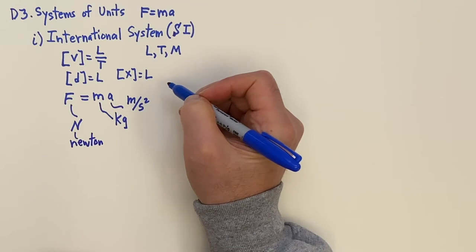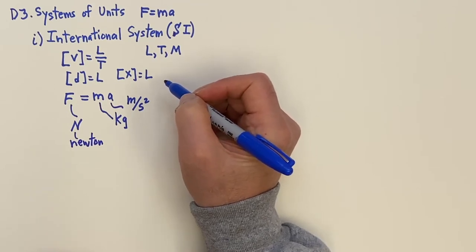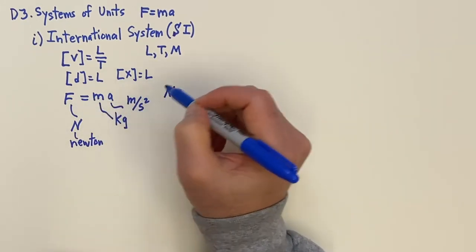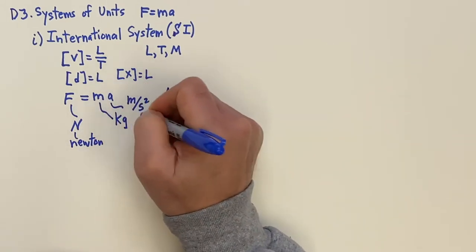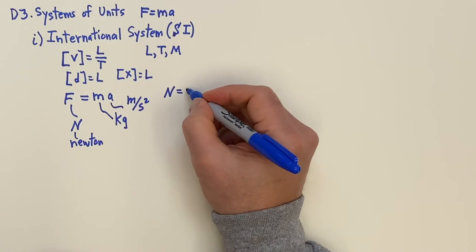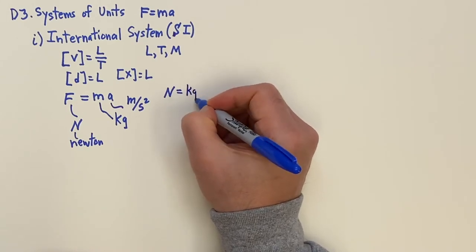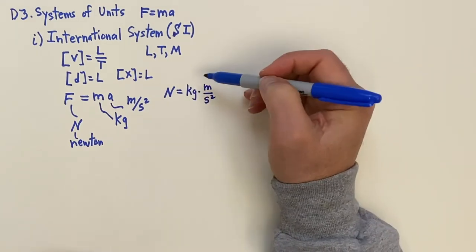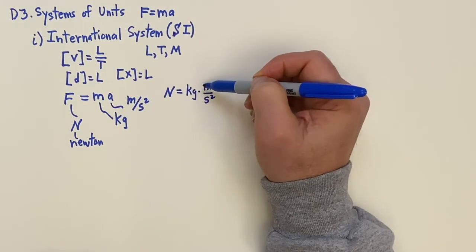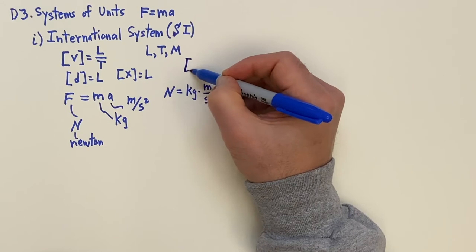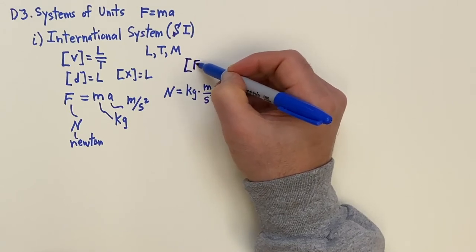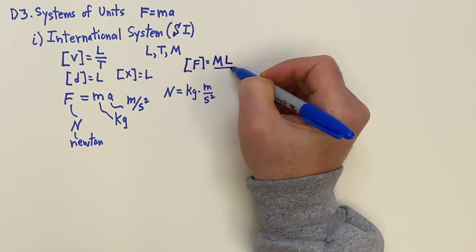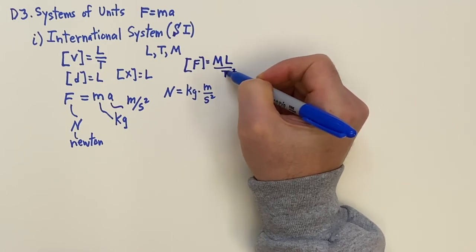So this is coming from F equals MA, and the definition, so the definition of the Newton, the Newton is by definition, one kilogram, one meter per second squared, when you put in one. So you can write the unit as a compound unit based on these other units. There it is. So we have the Newton as a kilogram meter per second squared. In other words, the units for force can be broken down as a mass and a length over time squared.